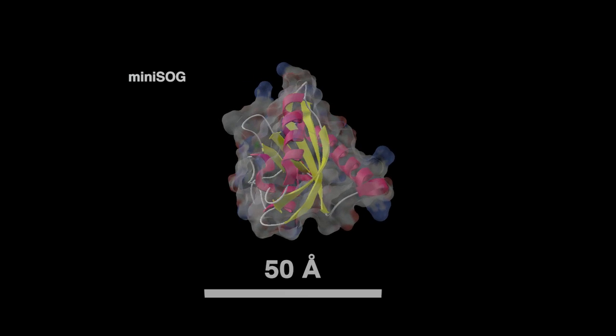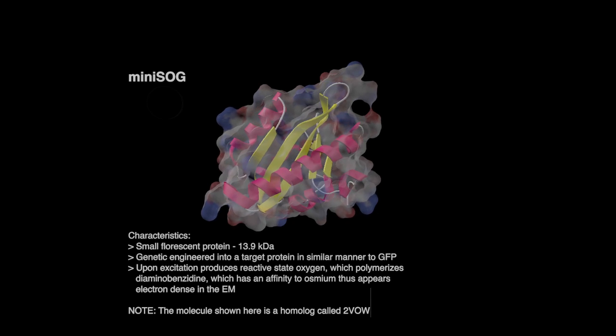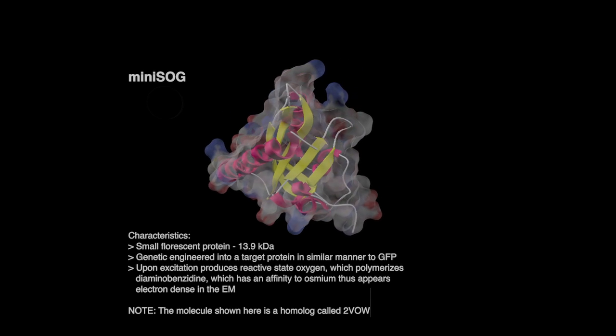This protein is 106 amino acids, less than half the size of green fluorescent protein, and can be fused at the genetic level to a target protein in much the same way as GFP.